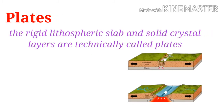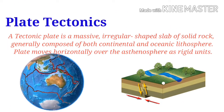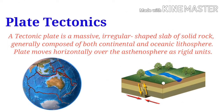The rigid lithospheric slab and the solid crustal layers are technically correct. A tectonic plate is a massive, irregular-shaped slab of solid rock, generally composed of both continental and oceanic lithosphere. Plates move horizontally over the asthenosphere as a rigid unit.